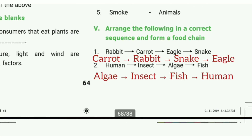Arrange the following in the correct sequence and form a food chain. 1st one: carrot, rabbit, snake, eagle. 2nd one answer: algae, insect, fish, human.